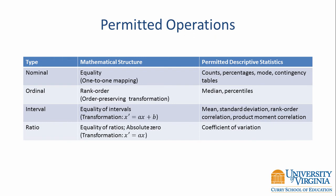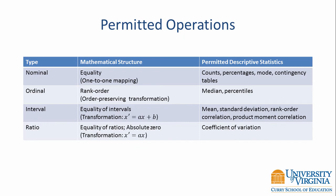Finally, ratio data has an absolute zero, and to transform ratio data from one scale to another, we need only multiply the values by a constant. All of the statistics used for ordinal and interval data may also be used with ratio data. We could additionally use the coefficient of variation, which is the ratio of the standard deviation divided by the mean.